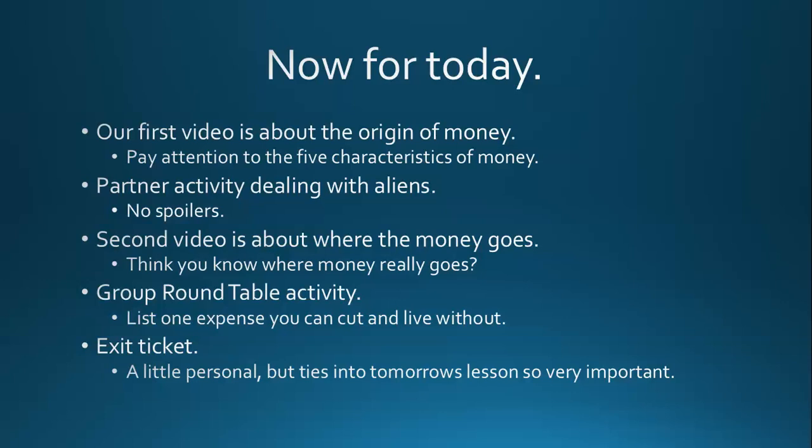Our first video is about the origin of money. Pay close attention to the five characteristics of money. The first activity after this video is a partner activity dealing with aliens — I don't want to spoil it because it's pretty fun. The second video is about where the money goes. Do you think you know where your money really goes? The second group activity after the second video is a group round table activity. You will list one expense you can cut and live without, and there will be more that is explained once we get to that activity.